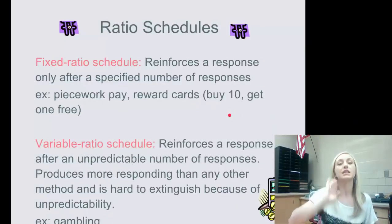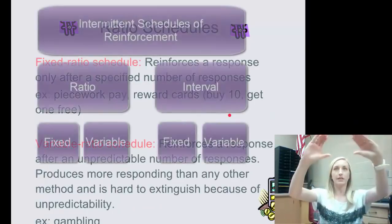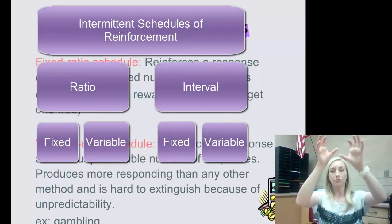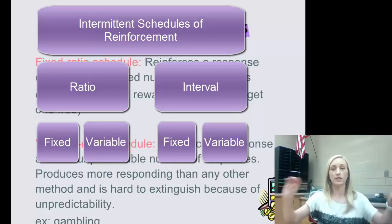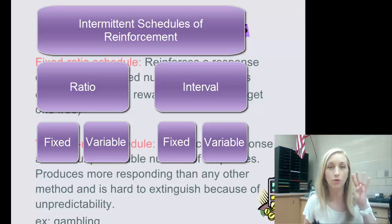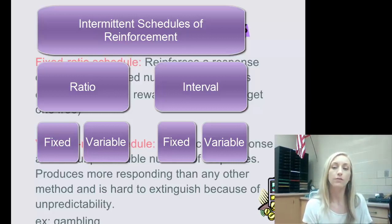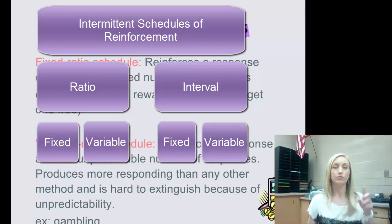There are more specifics with intermittent reinforcement — technically four different types of schedules, all somewhat similar. We're going to learn four new types, all being a variation of fixed versus variable and ratio versus interval.